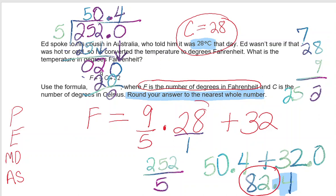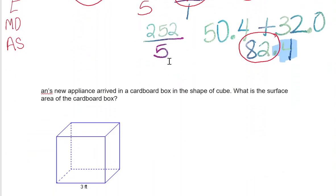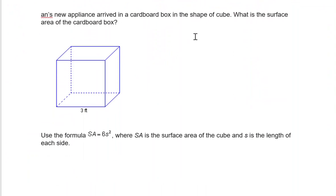Another example: we have a cardboard box in the shape of a cube. What is the surface area? They give us a formula for surface area. SA is the surface area. They tell us that S is the length of each side, which is 3 feet, so we know that S equals 3 and we want to find the surface area.